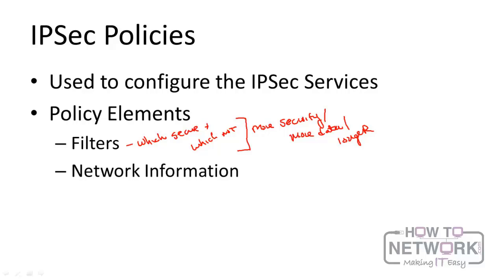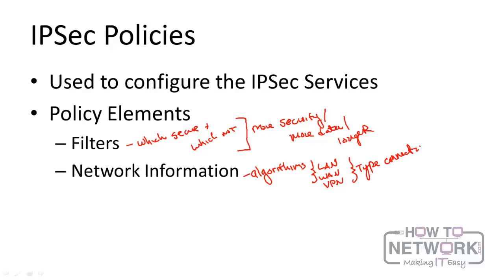Policies also need to be provided with proper network information, including security methods, connection types, and tunnel settings. Security methods are basically algorithms used in encrypting and authenticating the data. Connection types determine whether the policies will handle a local area network, a WAN, or a VPN. IPsec needs to know what type of connection is in use so it knows what level of security to put into place. With a wide area network or VPN, we need more security than with a LAN.